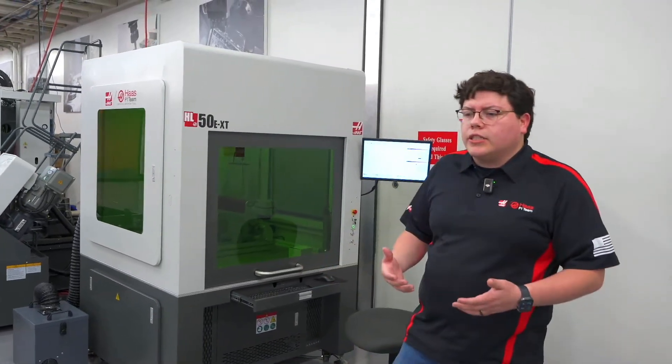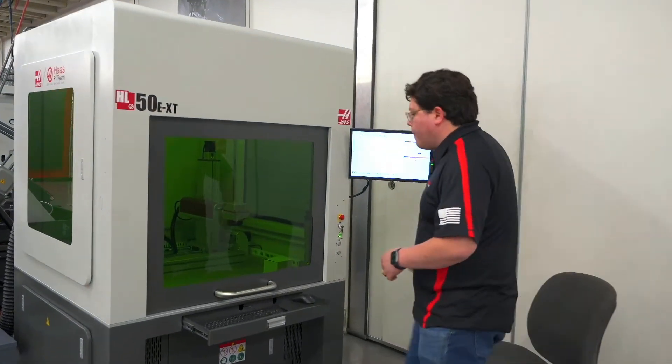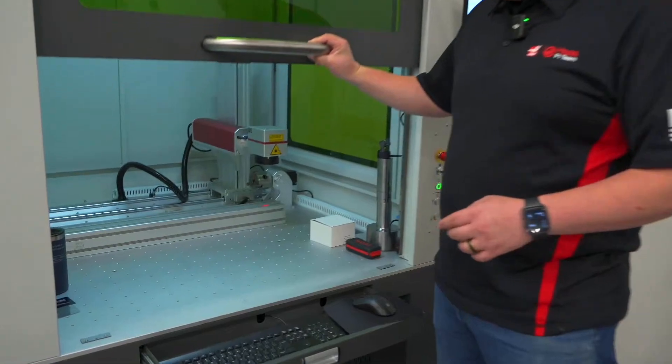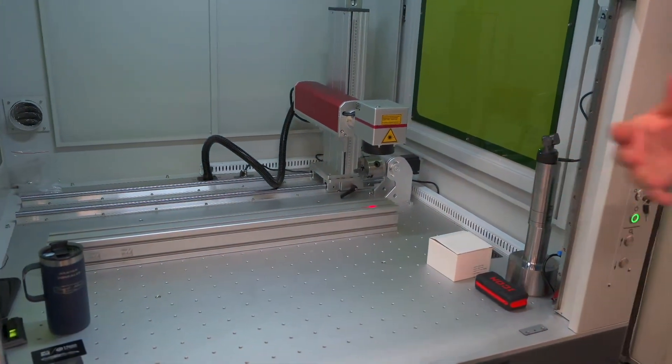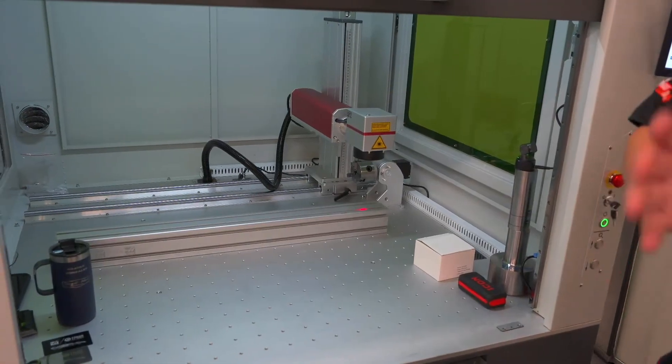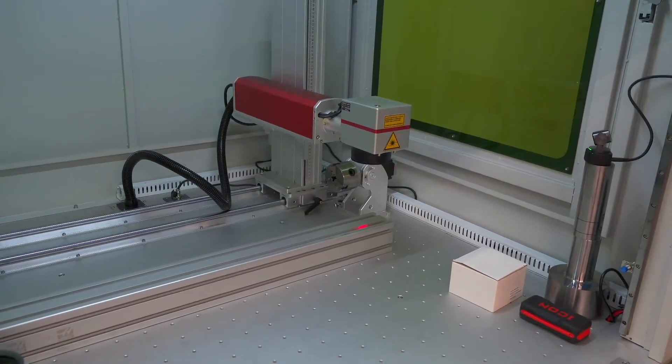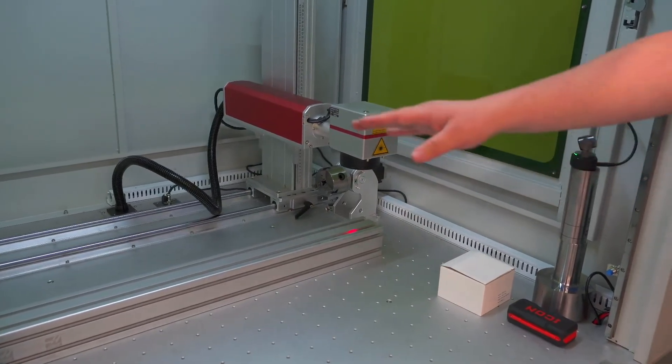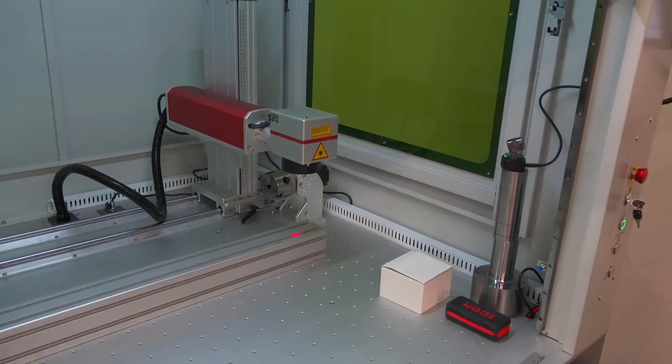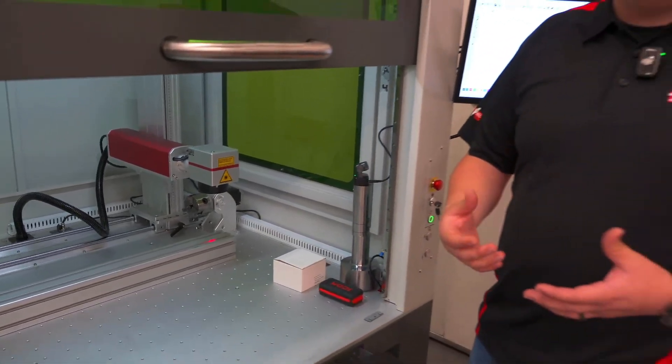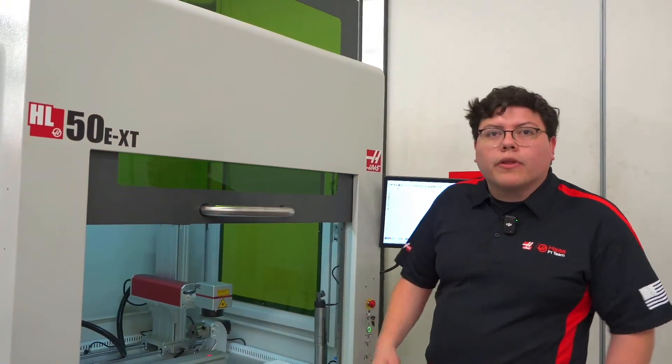The main difference we have with this new laser is the bigger volume. If you want to come over here, I'm going to open the door. You can see how massive the work area I have now. Before with the HL50E, I was only limited to the working area of the lens. But now with the HL50EXT, I now have a manual X gantry.